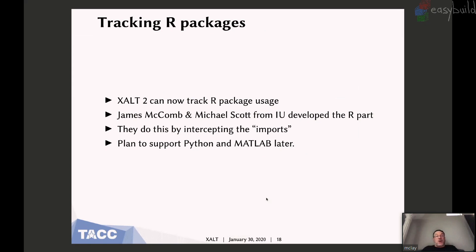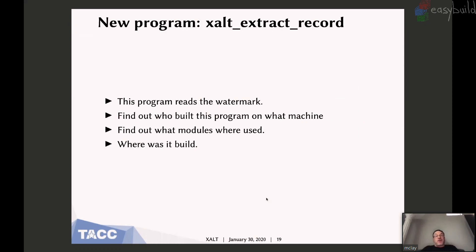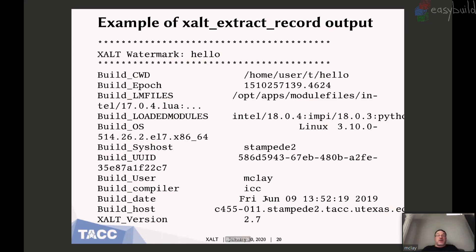We can track R — the people from Indiana University added the R part by tracking the imports. I need to add the one for Python and MATLAB. One of the surprisingly cool things about Exalt is that it leaves a watermark, and I've added a program that lets you extract it. You can find out all kinds of things quickly about a program: who built it, on what machine, what modules were loaded, when it was built, what compiler was used, and what version of Exalt recorded it.